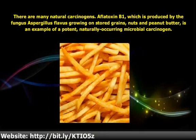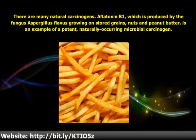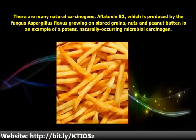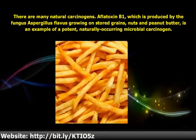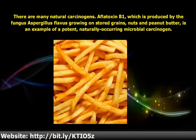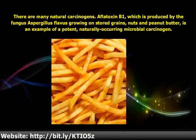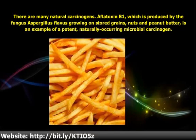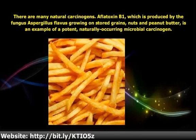There are many natural carcinogens. Aflatoxin B1, which is produced by the fungus Aspergillus flavus growing on stored grains, nuts, and peanut butter, is an example of a potent naturally occurring microbial carcinogen.